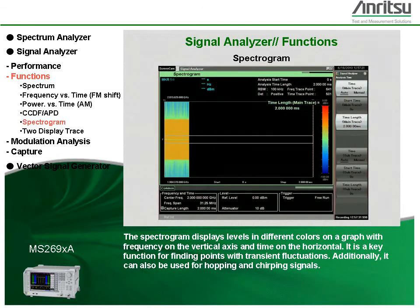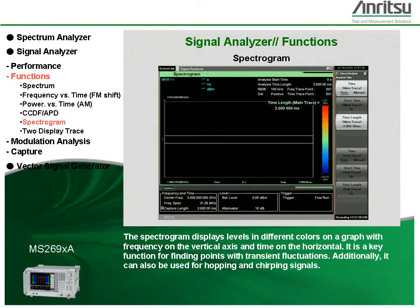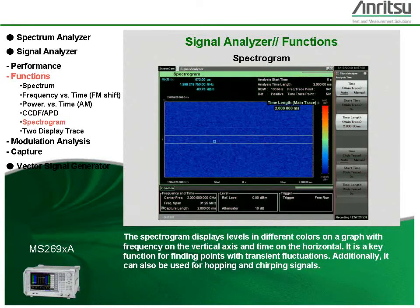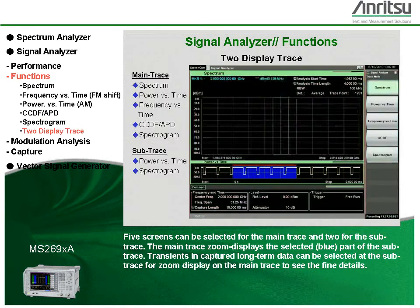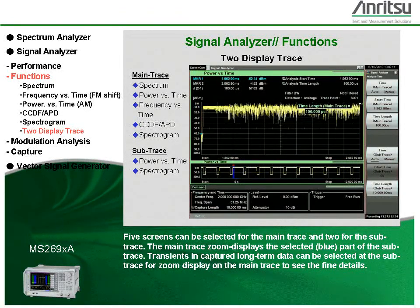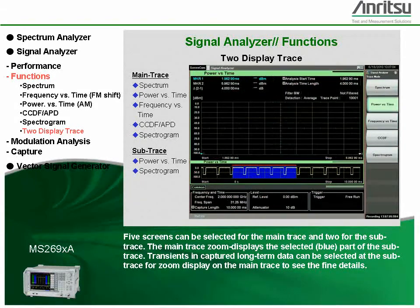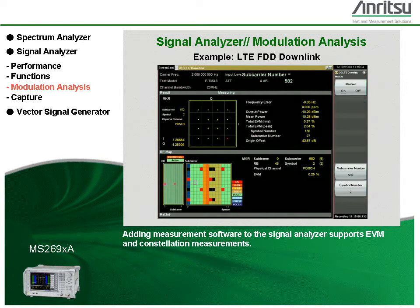The APD display indicates the probability distribution of transient power fluctuations compared to average power. The spectrogram displays levels in different colors on a graph with frequency on the vertical axis and time on the horizontal. It's a key function for finding points with transient fluctuations, and can also be used for hopping and chirping signals. Five screens can be selected for the main trace and two for the sub-trace. The main trace zoom displays the selected blue part of the sub-trace, allowing fine detail viewing of transients and captured long-term data. Adding measurement software to the signal analyzer supports EVM and constellation measurements.